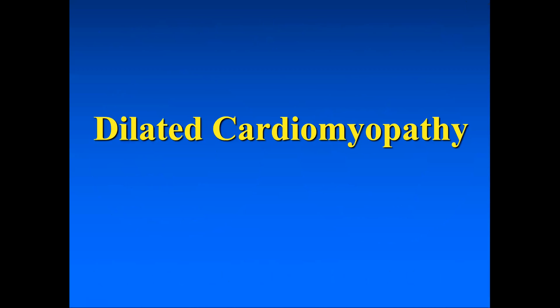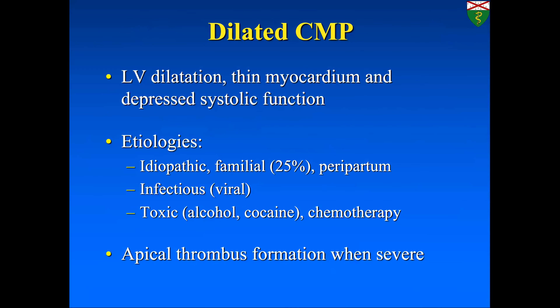The first primary cardiomyopathy is dilated cardiomyopathy: left ventricular dilation, very thin myocardium, and depressed systolic function. The most common cause is ischemic, but non-ischemic causes include idiopathic, familial, peripartum, infection, and toxicity. When advanced, the ventricle is severely dilated with severely depressed function, leading to stagnant blood and apical thrombus formation, which cardiac MR can help identify.